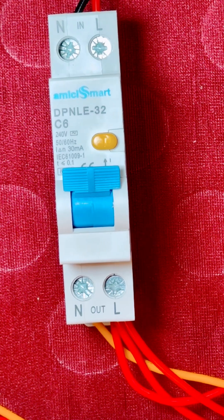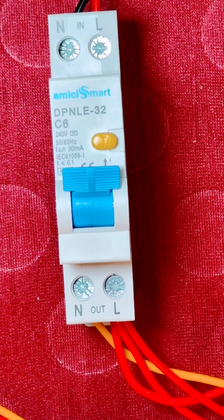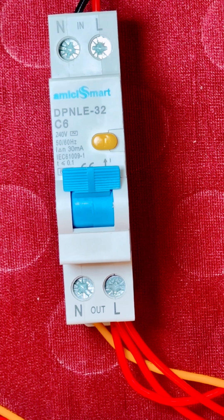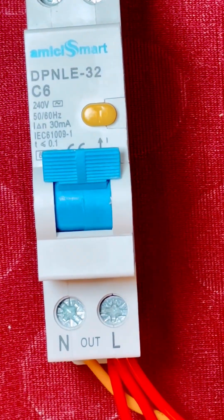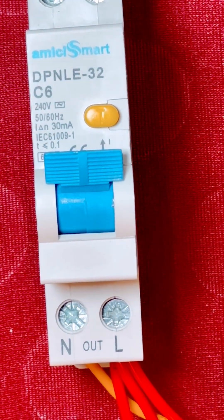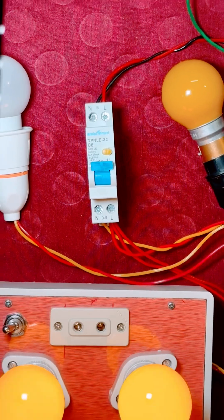Hi viewers, look at the RCCB placed here. You can see the differential current is 30 milliampere. That means this RCCB will trip if the bypass current is more than 30 milliampere. Now please look at the setup.